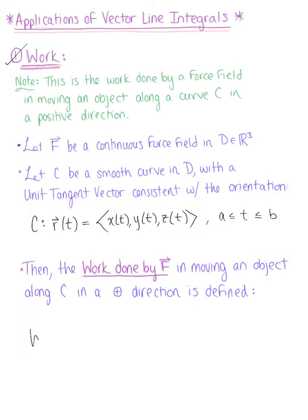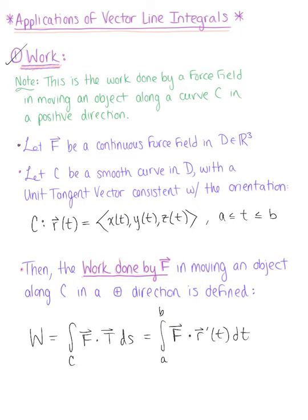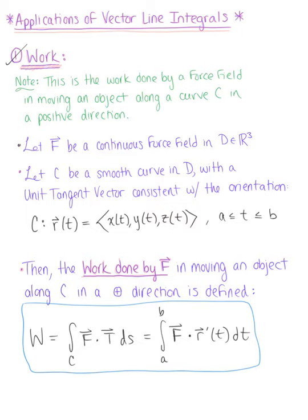defined by the vector line integral. We have the integral over C of the dot product of the force field and the tangent vector with respect to the arc length, which is equivalent to the integral from A to B of the force field dotted with the tangent vector with respect to T dt. This is the vector line integral used to find the work done by the force field in moving an object along the curve C in a positive direction.